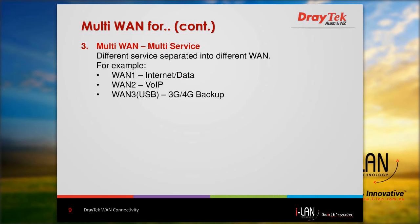The next multi-WAN feature is multi-service. This is a typical usage where multi-WAN assigns different WAN connections for different services. For example: internet or data with VDSL2 on WAN 1, VoIP on WAN 2, and WAN 3 USB as 3G and 4G backup.